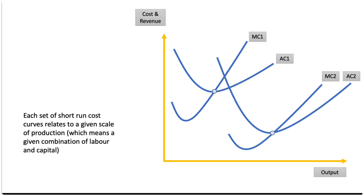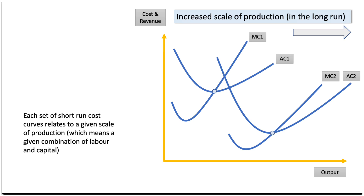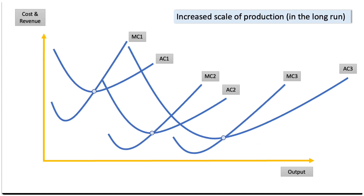And hopefully, as they do that, their capacity to produce goes up, so they can achieve greater output, and the unit cost of supply may go down — economies of scale. So increased scale of production is essentially a movement from left to right on that diagram. I've only shown two sets of cost curves here; let me broaden the analysis out a little bit with three sets of cost curves.